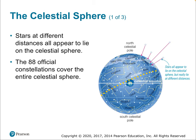Stars at different distances all appear to lie on the celestial sphere. In ancient times, philosophers and astronomers thought the celestial sphere was real — an actual shell surrounding us, sometimes called the firmament, thought of as almost a fixed painting. This was reasonable because the stars didn't appear to move, at least not over the duration of a human lifetime.